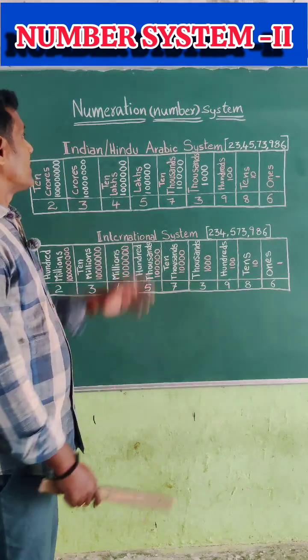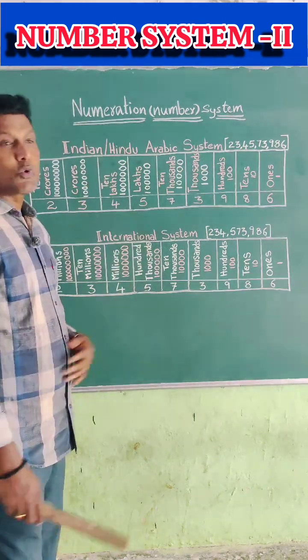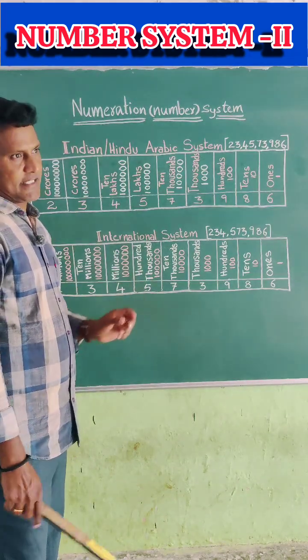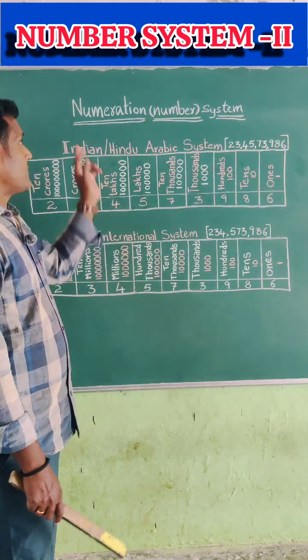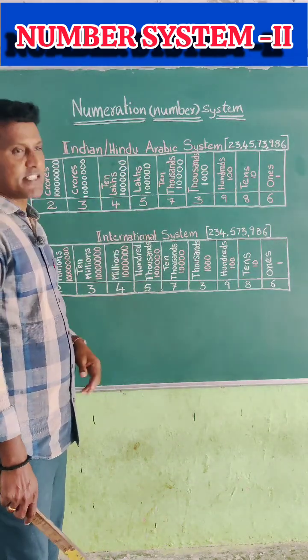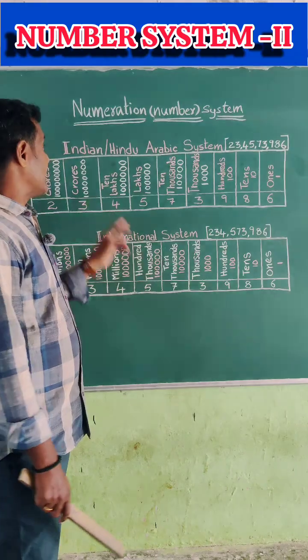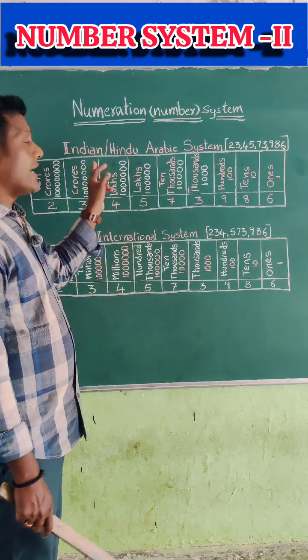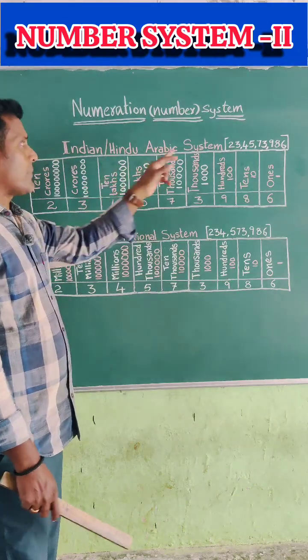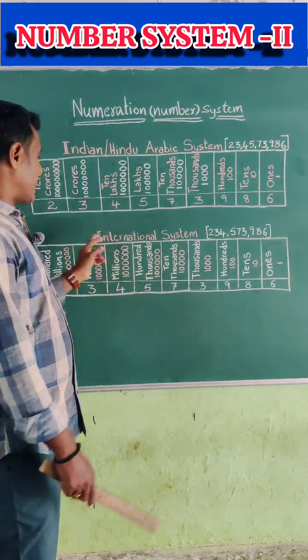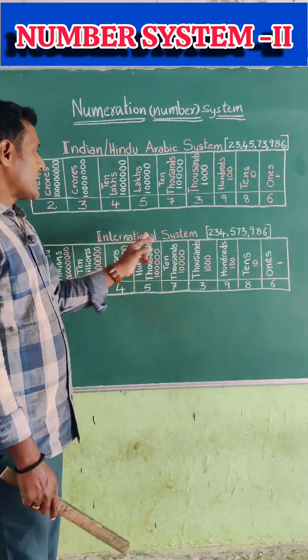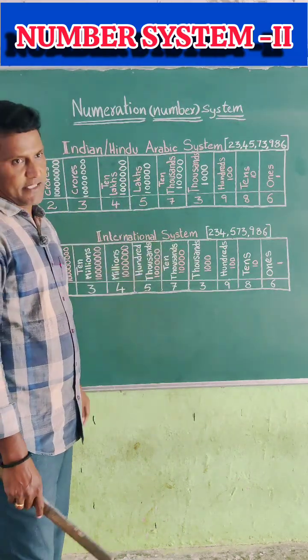Children, we have two types of number systems, that means numeration systems. They are the Indian or Hindu Arabic system, and one more, the international number system.